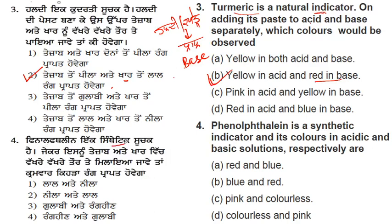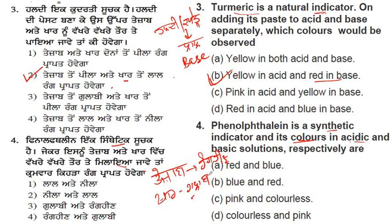Phenolphthalein is a synthetic indicator. Its color in acidic and basic solutions respectively: when you add phenolphthalein to an acidic solution, the color is colorless. But when added to a basic solution, the color is pink (gulabi). So the answer is colorless in acid and pink in base.